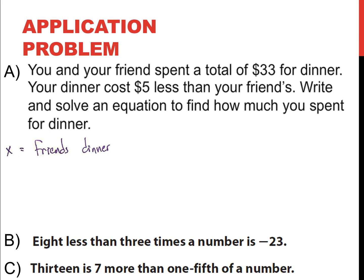In the problem, it says our dinner costs, or your dinner costs, $5 less than your friend's. So, if your friend's costs x, then yours would cost their dinner minus $5. Cool. So, now we know that your dinner is x - 5, and your friend's dinner is x.